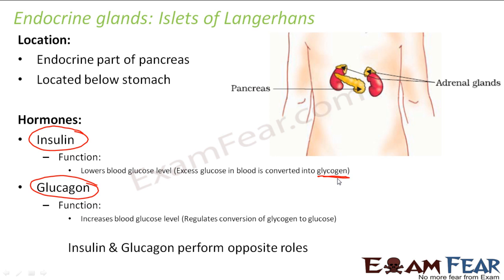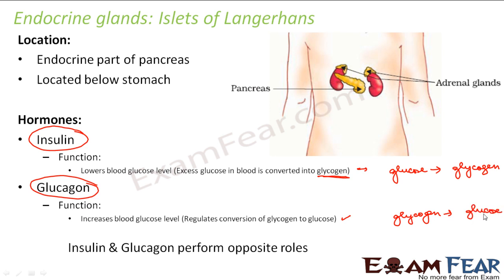The other hormone, glucagon, increases the blood glucose level — performing exactly the opposite function of insulin. If insulin alone functioned, it would keep reducing glucose until there was none left, which would be a problem since cells need glucose. So whenever glucagon detects that blood glucose has dropped too low, it converts glycogen stored in muscles back into glucose. Insulin converts glucose to glycogen, and glucagon converts glycogen to glucose. Together, insulin and glucagon maintain the right amount of glucose in the blood.